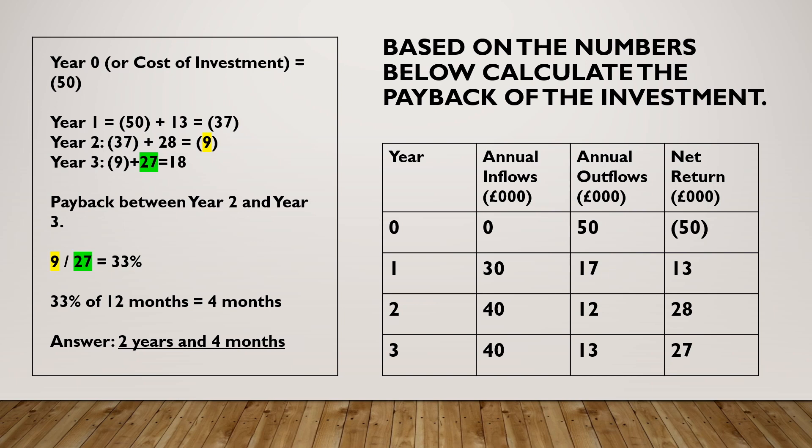You've got £9,000 left to pay. Looking at Year 3, the net return is £27,000, so clearly at some point through Year 3 you're going to pay back the cost of the investment — you do not need to wait until the end of Year 3. So the payback is between Year 2 and Year 3.